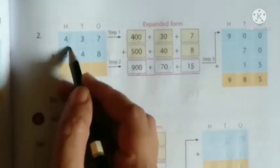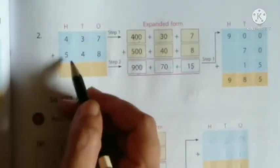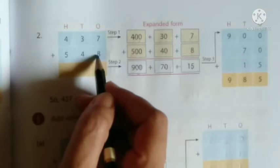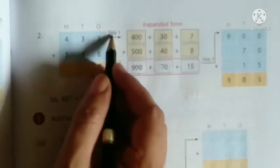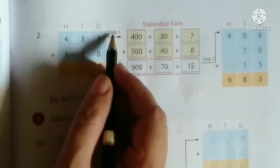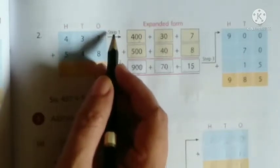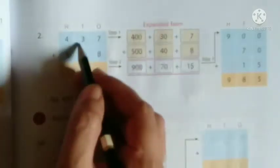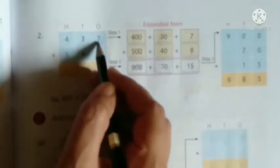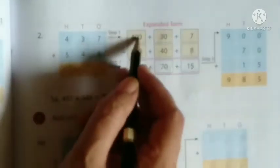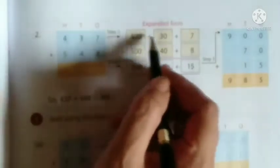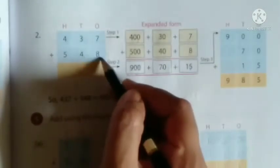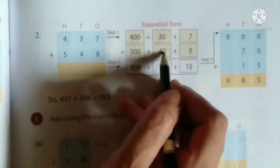Now example 2: 437 plus 548. First, write each number in the expanded form. 437 is 400 plus 30 plus 7. Then 548 is 500 plus 40 plus 8.